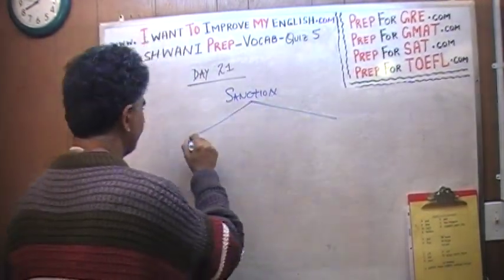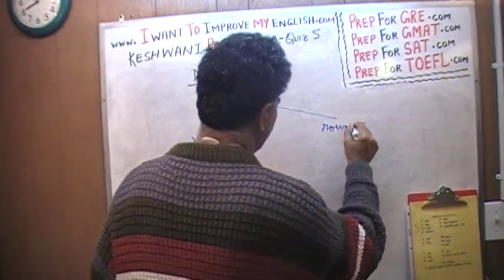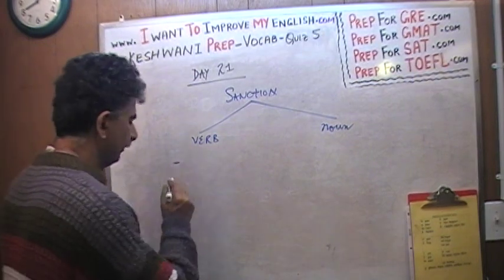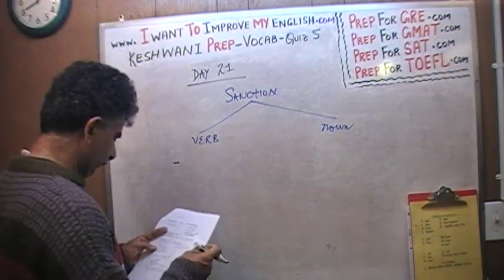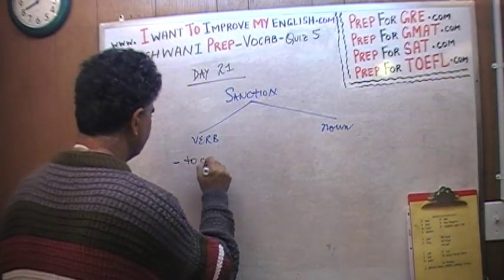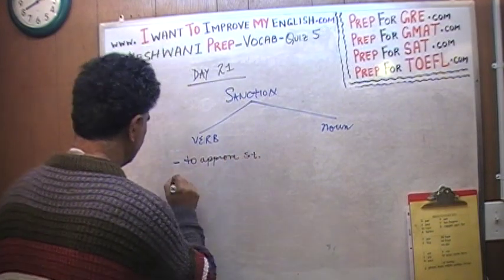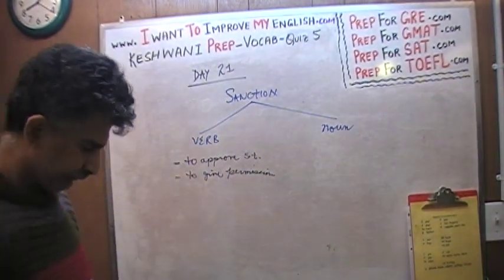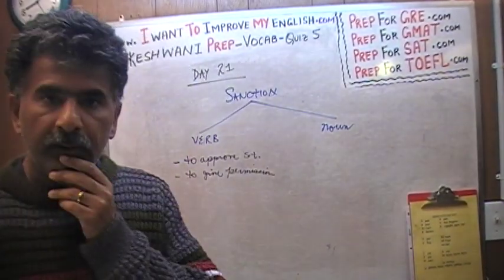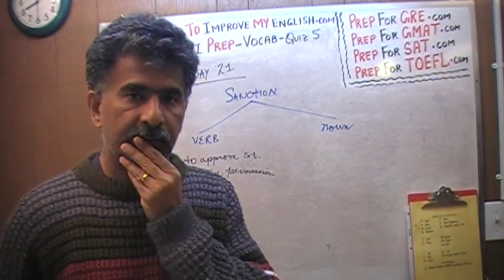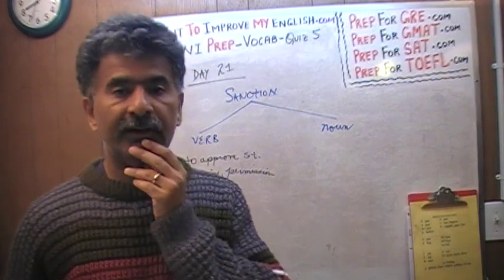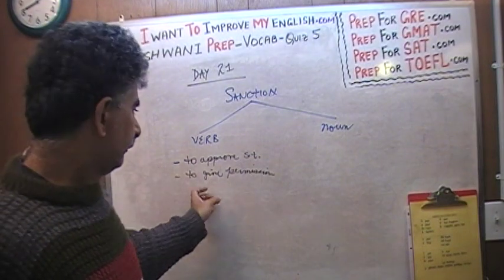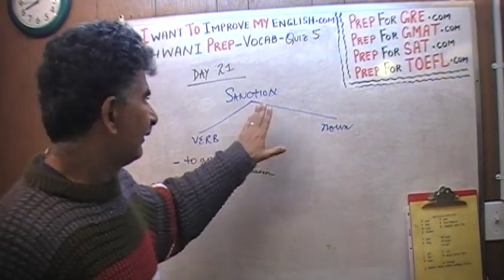As a verb, to sanction something means to approve something, or to give permission. For example: 'You're riding a motorbike at such a young age — do your parents know about it?' 'Yes, my parents know about it and they sanction it' — meaning they are aware of it and have given permission.